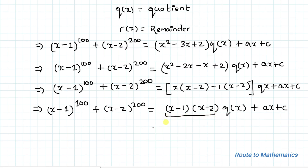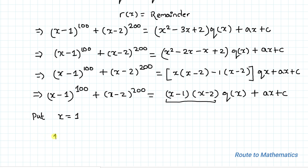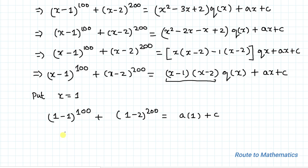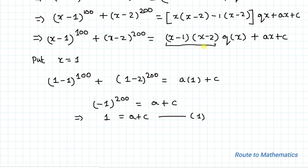We now have two factors of the divisor. Put x equals 1. If we put x equals 1, we get (1 minus 1) to the power 100 plus (1 minus 2) to the power 200. The first term becomes 0, so the (x minus 1)(x minus 2) q(x) term vanishes entirely. We have (minus 1) to the power 200 equals a times 1 plus c. Since the power 200 is even, this gives 1 equals a plus c. This is equation 1.